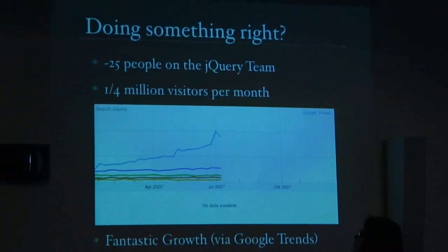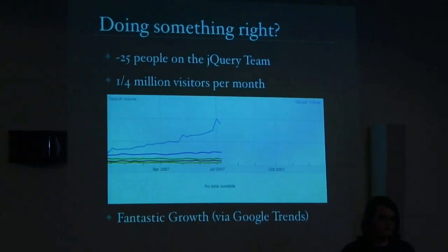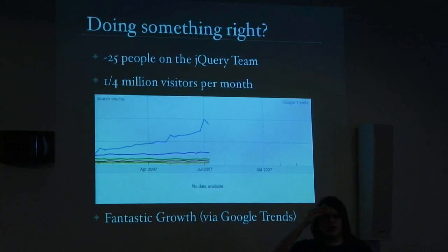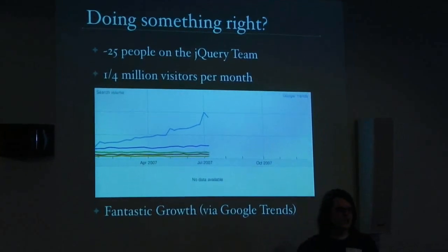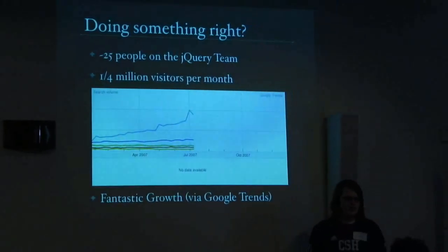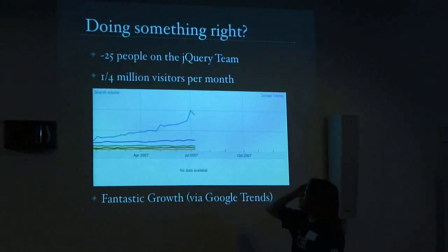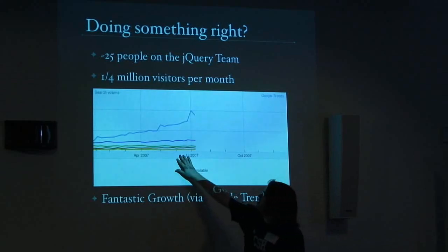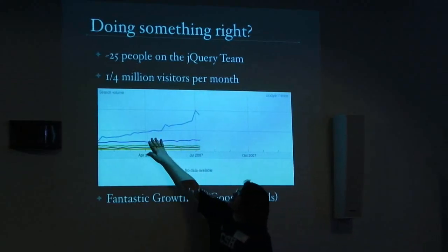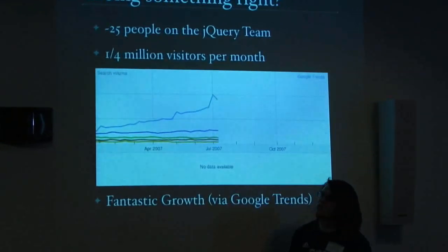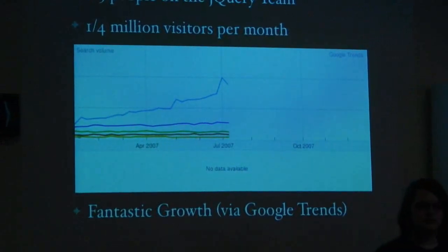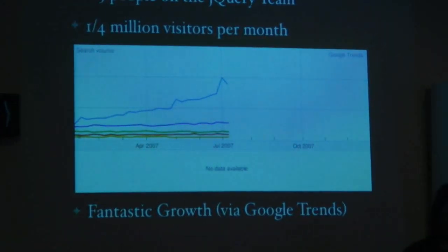I'd like to think I did something decent with jQuery. Currently we have about 25 people working on jQuery in all various aspects. We get about a quarter million visitors per month. Here on Google Trends you can probably guess which one is jQuery — and these are the other popular JavaScript libraries like Prototype and Dojo. So I think we're doing pretty well for ourselves at the moment.